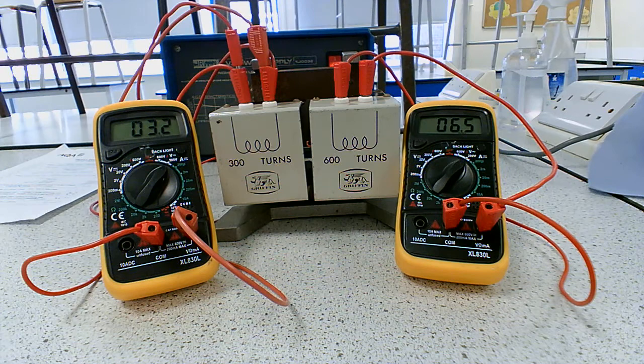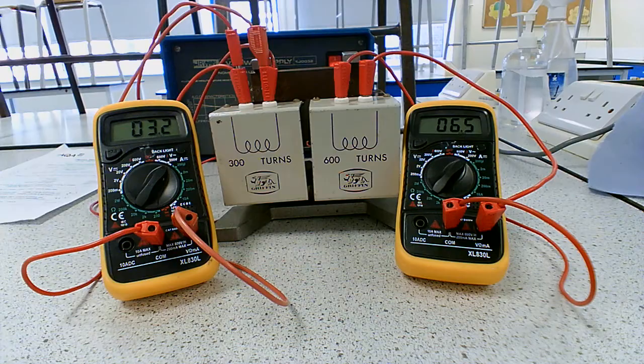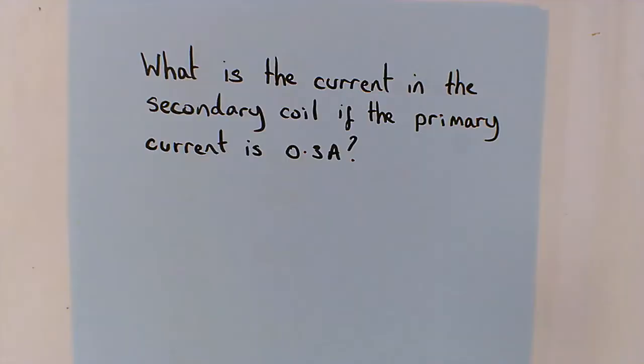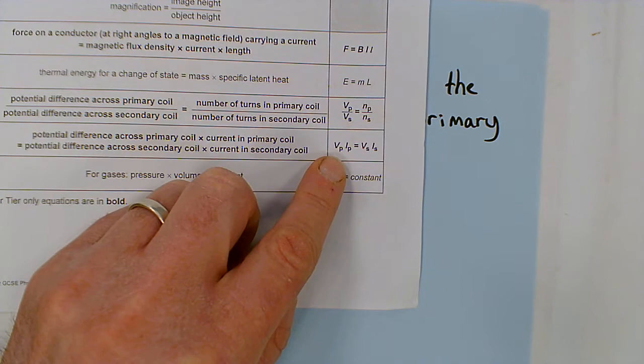The next thing we need to do is try to calculate current if we know it. So the next part of this is to work out the current if we know it in the primary coil. Here's the question: what is the current in the secondary coil if the primary current is 0.3 amps? We need to use another equation that you are given and that is this one here: VP·IP = VS·IS.